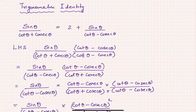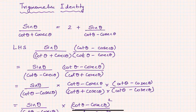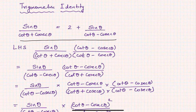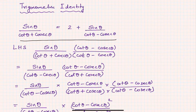Hello, welcome to another session on trigonometric problem solving. We are going to take up one trigonometric identity and prove it. The question says: prove that sin θ/(cot θ + cosec θ) = 2 + sin θ · sin θ/(cot θ - cosec θ). We will discuss two approaches: one where we take the LHS and manipulate it to get the RHS, and another where we adjust the identity to a more comfortable form.